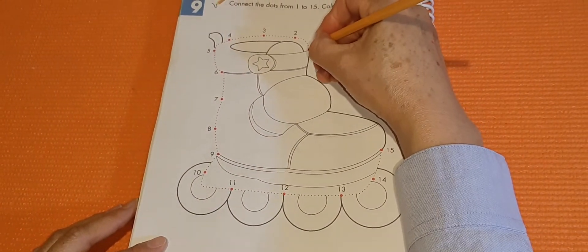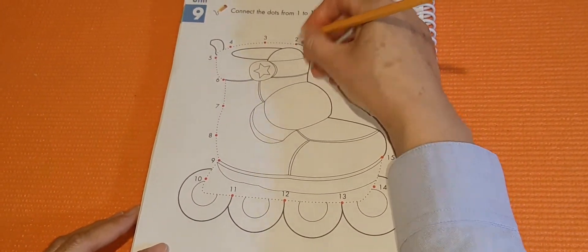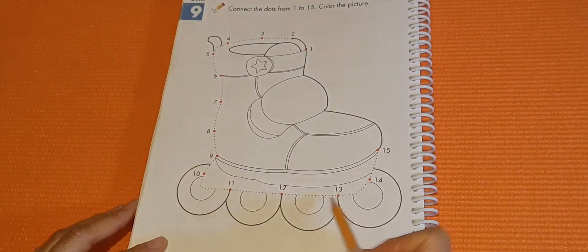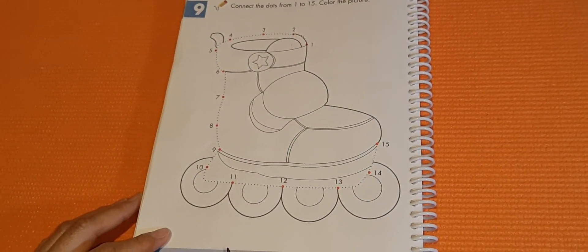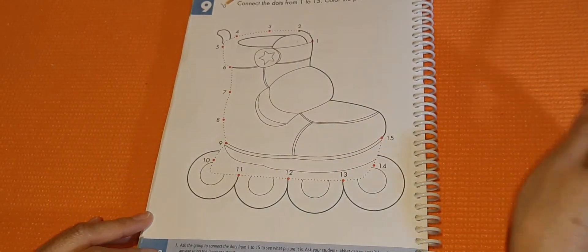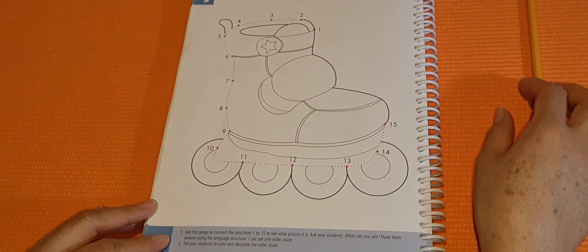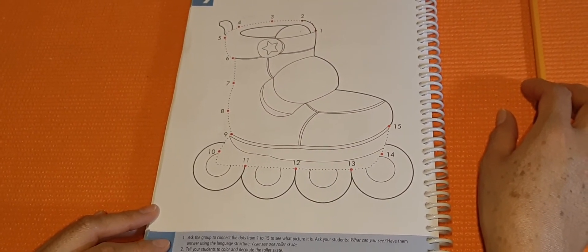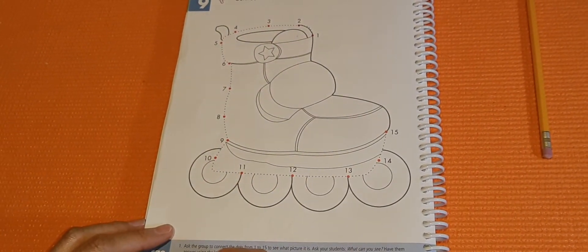So, take your pencil and keep on doing the activity. When you're finished, color the picture and talk about it. What is it? A roller skate. And that's it on this page.